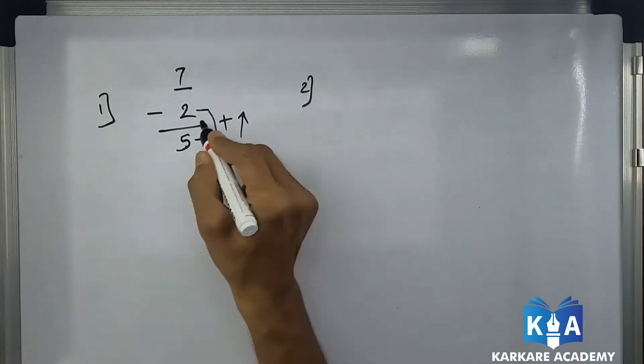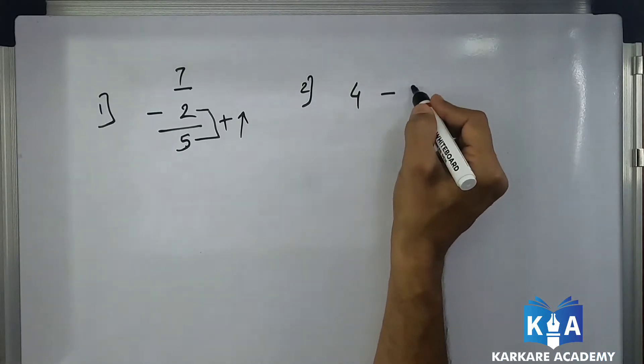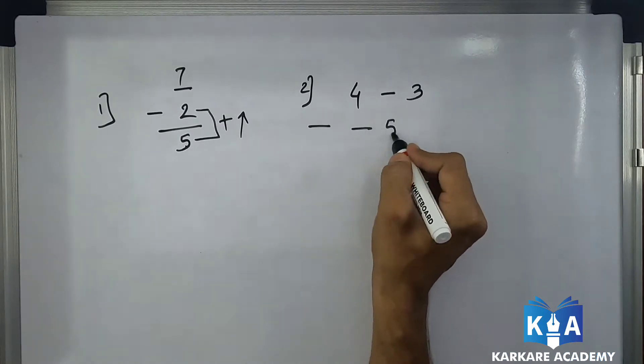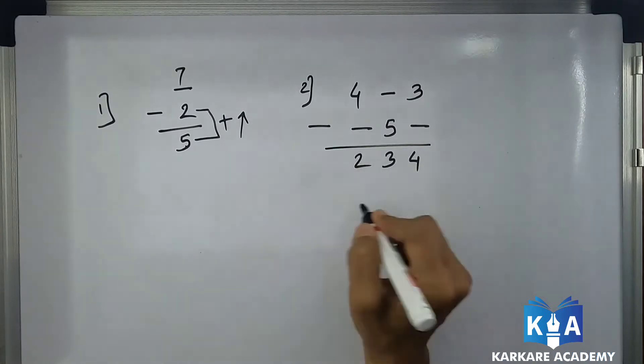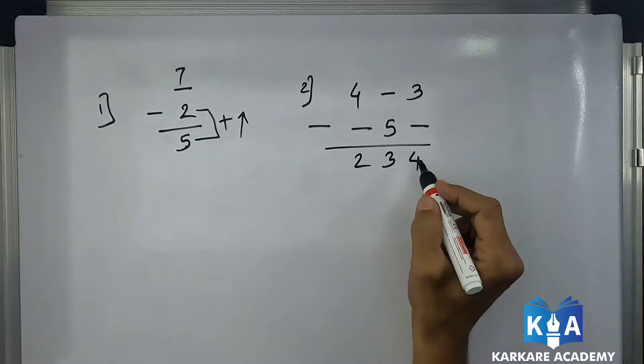Same technique we are going to use here. 4 dash 3 minus dash 5 dash equals 234. Now how to solve this one. These are very typical questions of competitive exam.